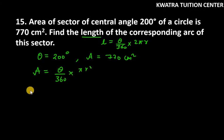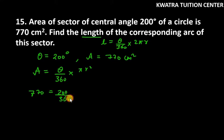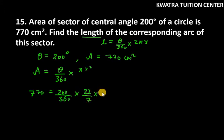Area is 770, theta is 200, at the bottom it is 360, multiplied by pi which is 22/7, and r² is unknown.